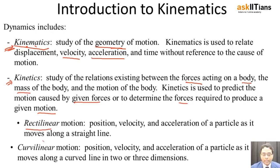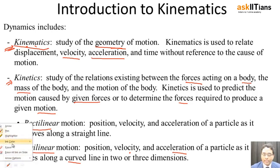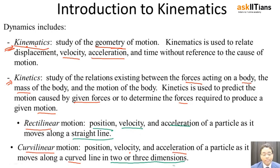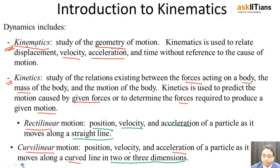We can differentiate kinematics into two basic parts: rectilinear motion and curvilinear motion. In curvilinear motion, the position, velocity, and acceleration of a particle moving along a curved line are changing. The particle moves in two or three dimensions — not along a straight line — so at any instant of time there are two components of the vector values present for position, velocity, and so on.